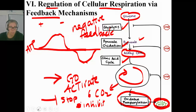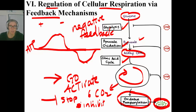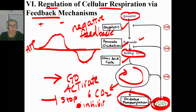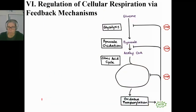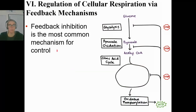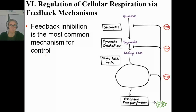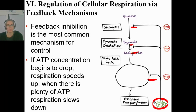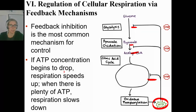You could also call it feedback inhibition. Feedback inhibition happens when the product of some process goes back and slows down or stops something earlier in the system. Feedback inhibition is the most common mechanism for control of metabolic pathways — it's when your final or one of your final products stops something earlier up. If ATP concentration drops, respiration speeds up. When there's plenty of ATP, respiration slows down.